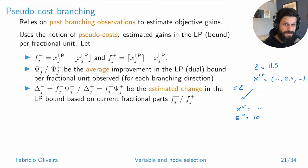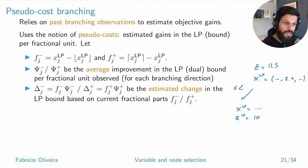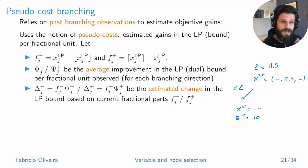With pseudo costs, you can estimate from the outset how much benefit you'll get by branching on a given variable, because you use that estimate to know how much the dual bound will change. Clearly, for this to work you need historical information — in the beginning, before you've branched on a variable, those averages will be completely off, which is why strong branching and pseudo costs are somewhat complementary.